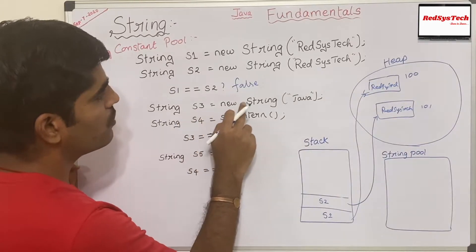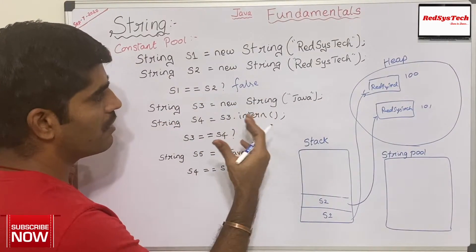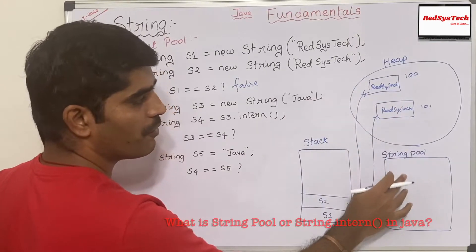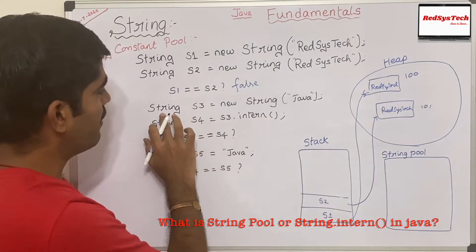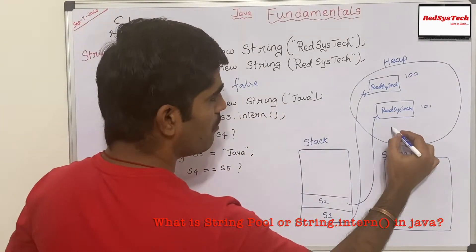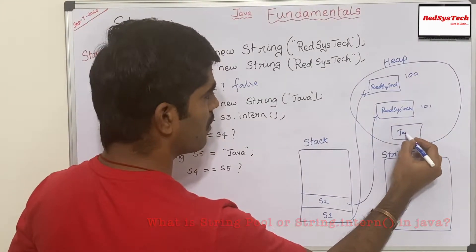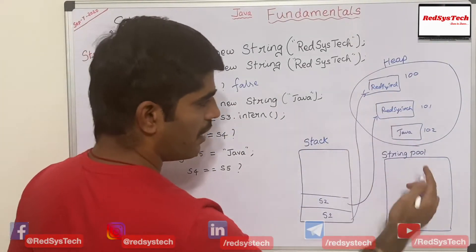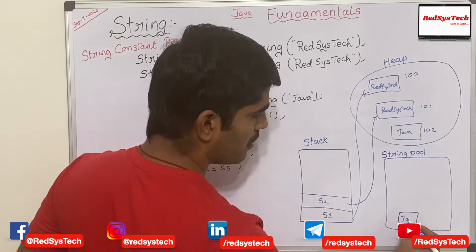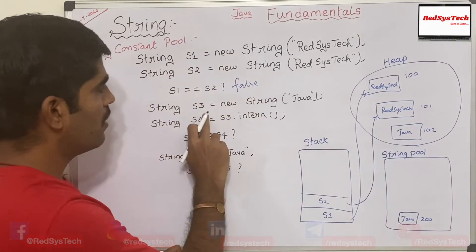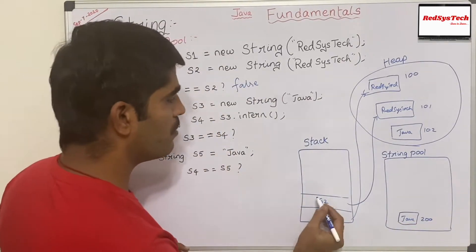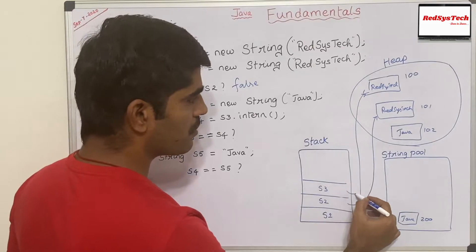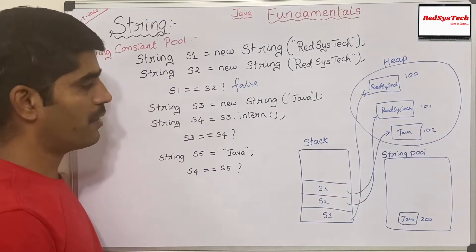String s3 = new String("java"). Whenever we create any object in heap, one copy of that object is also stored in the pool. So when we say String s3 = new String("java"), an object is created in heap with the content 'java' — let's say at address 102 — because we used the new keyword. And another copy is also created in String Pool at, say, address 200. s3 is the object reference stored in stack and refers to address 102 in heap.